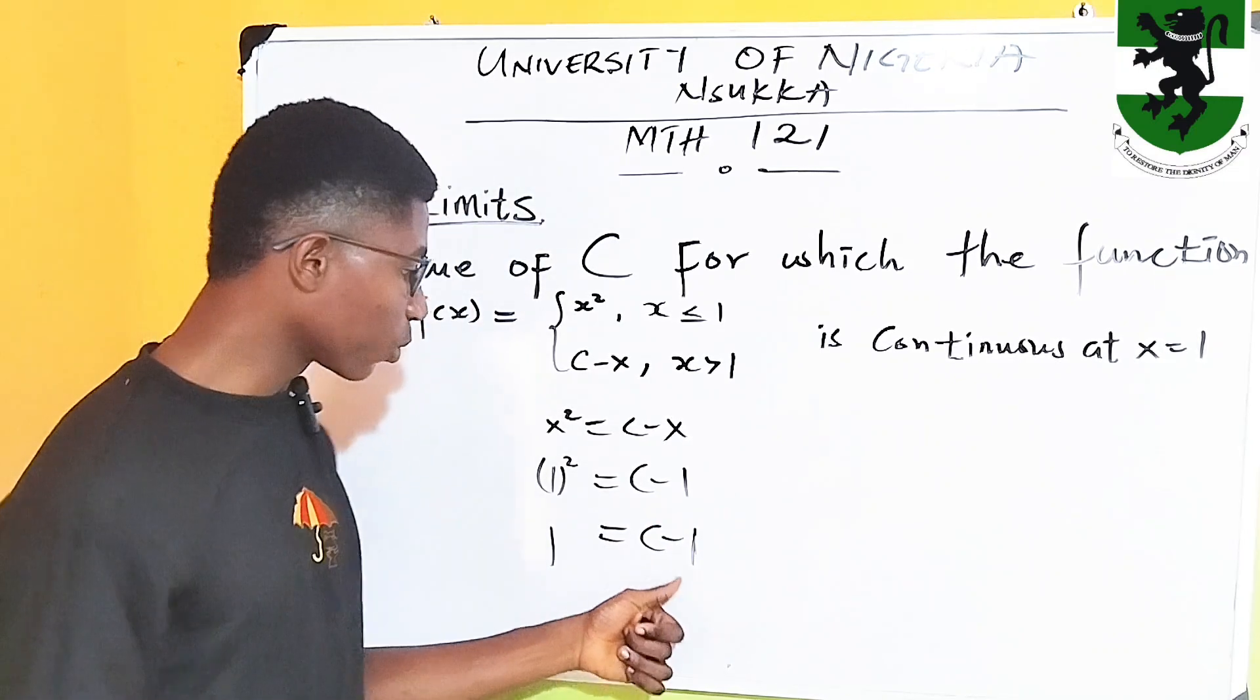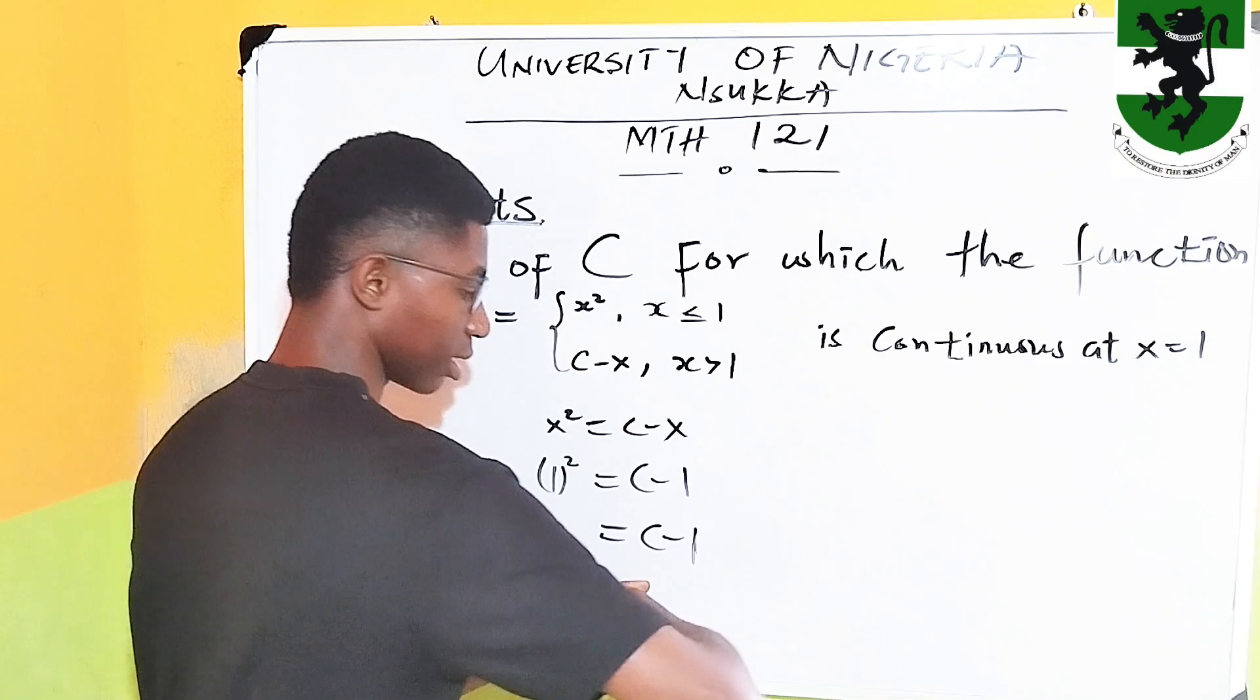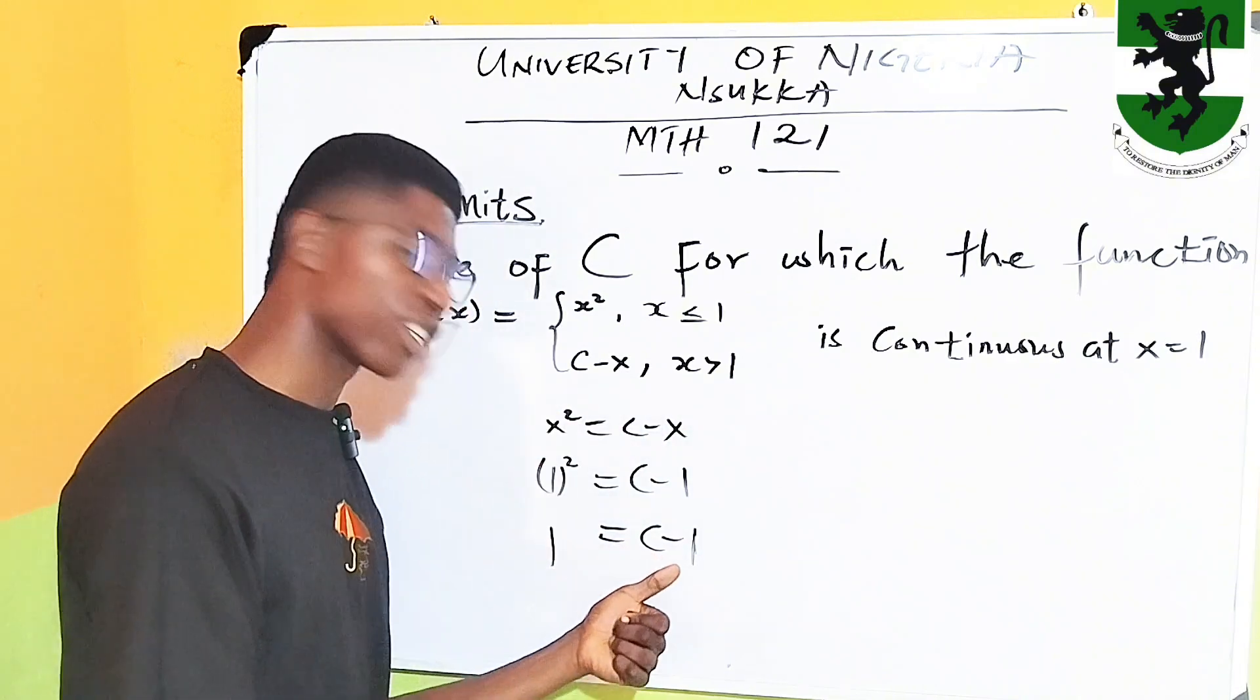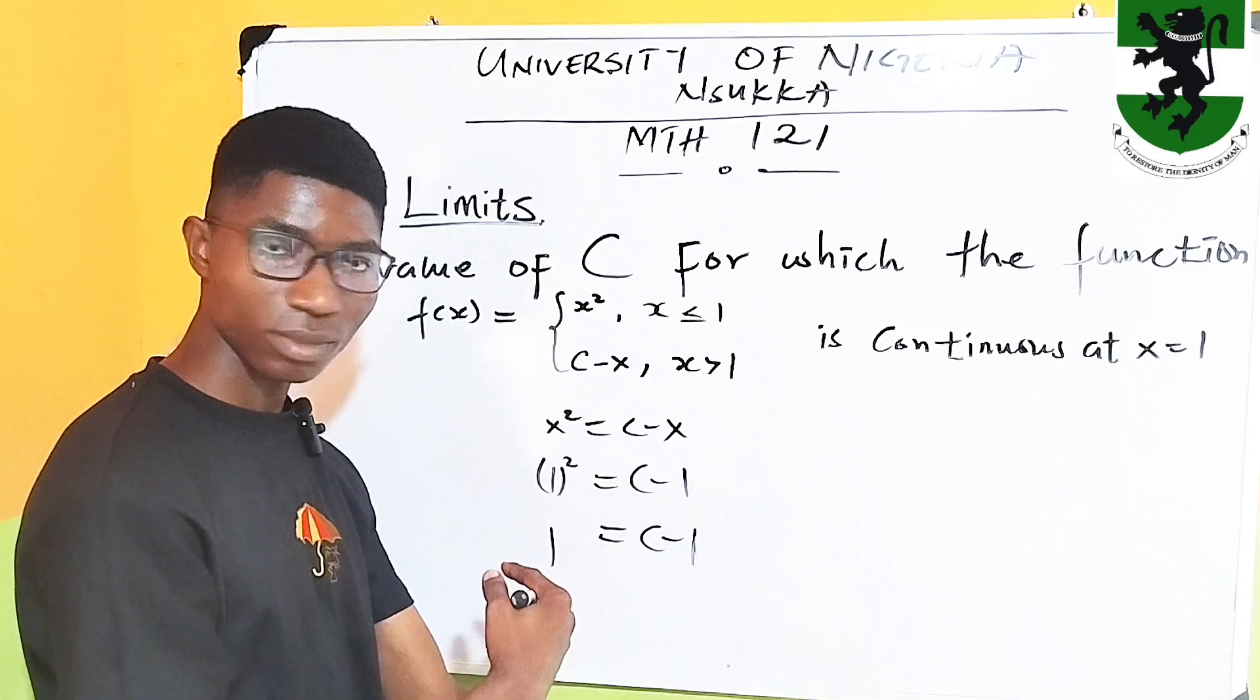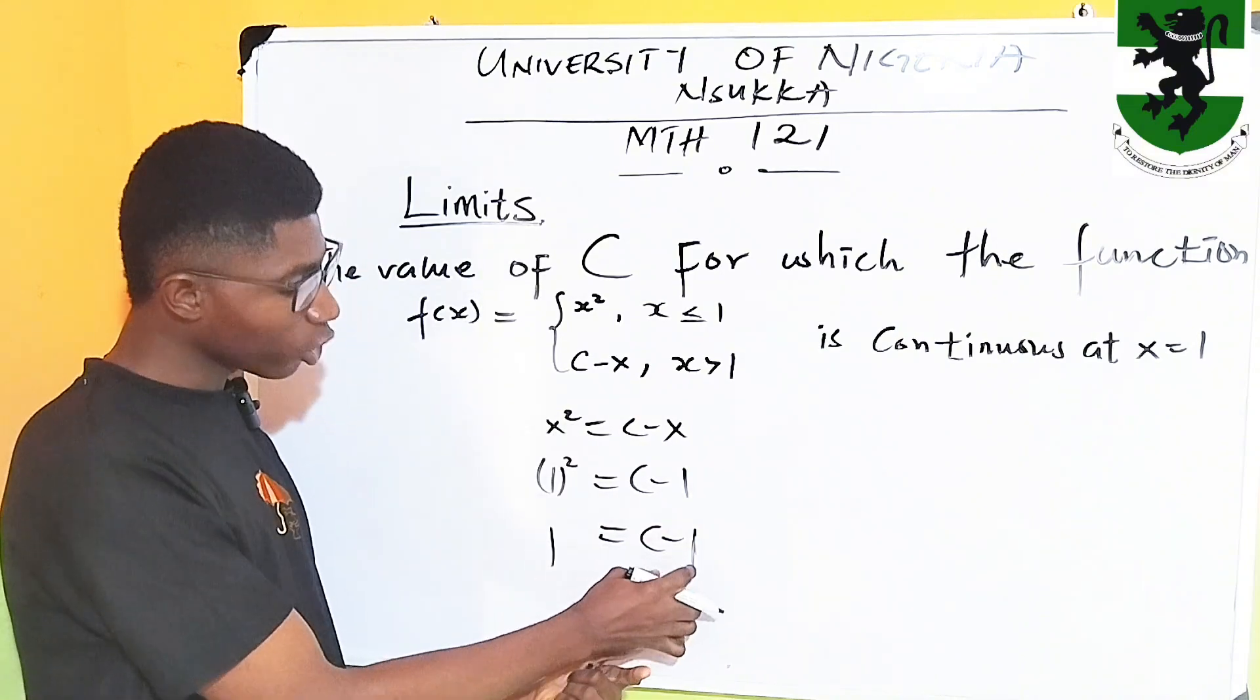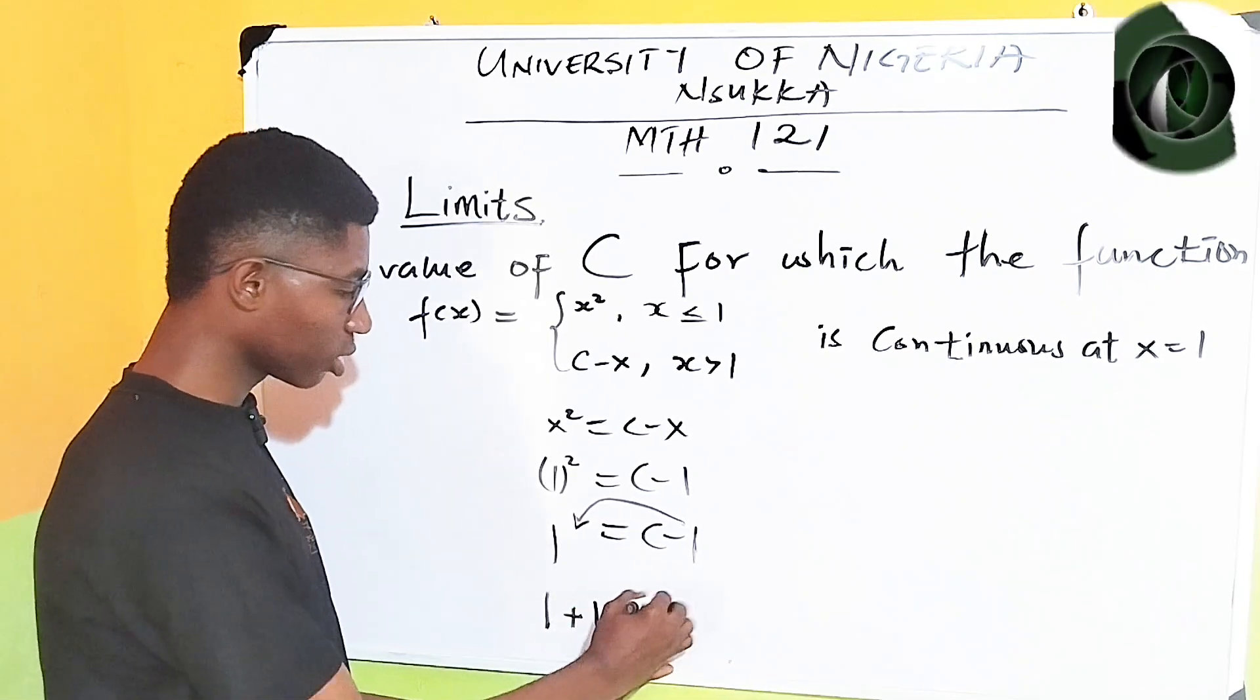Let's make c the subject. We are going to cross any other term here that doesn't have c. The term on the right-hand side of the equal to sign is c minus 1. The one that doesn't have c is minus 1. So, we are going to cross it to the left-hand side. This is minus 1. As minus 1 crosses to the left-hand side it becomes plus 1, as a term crosses the equal to sign, the sign of the term changes.